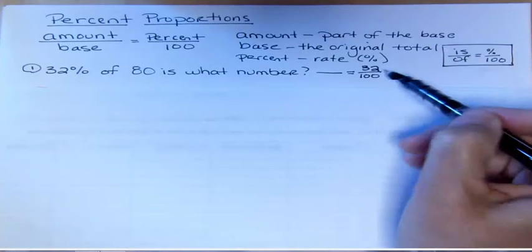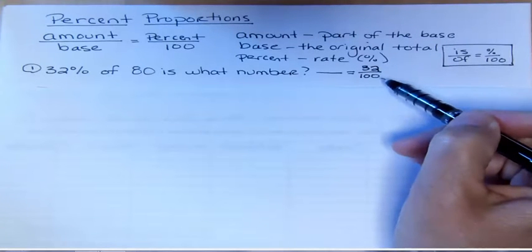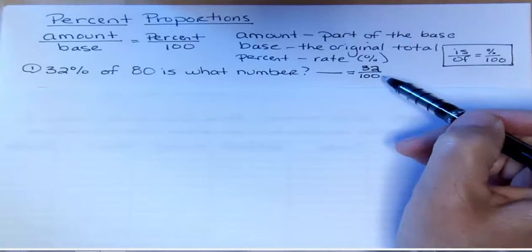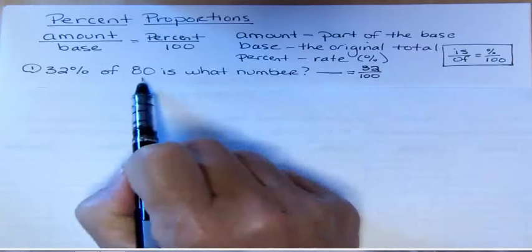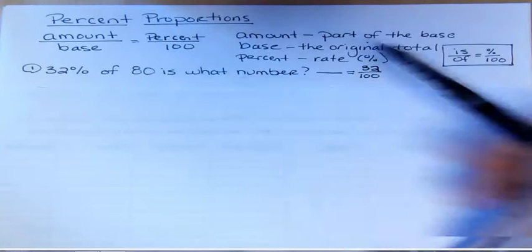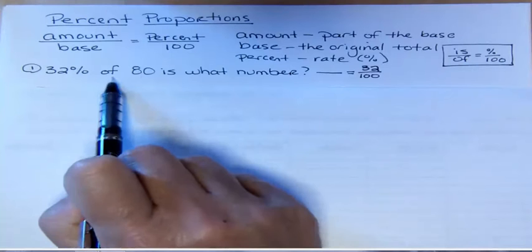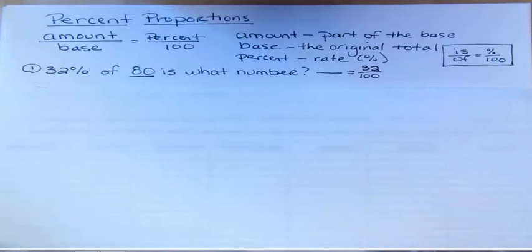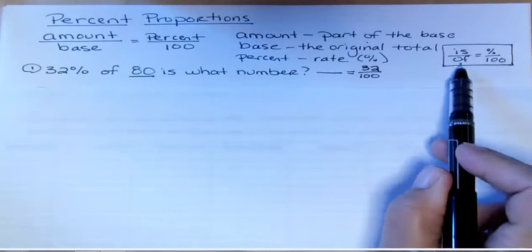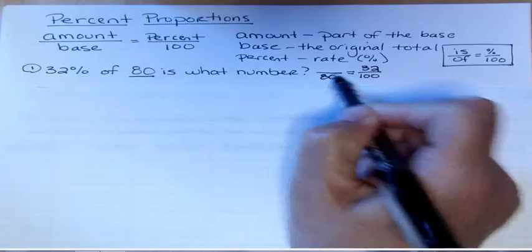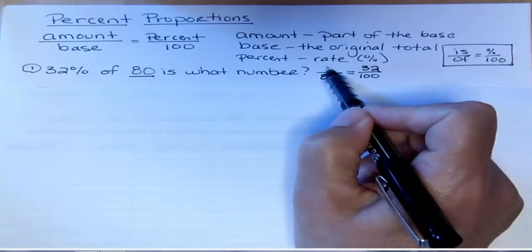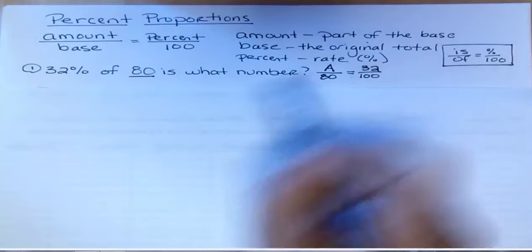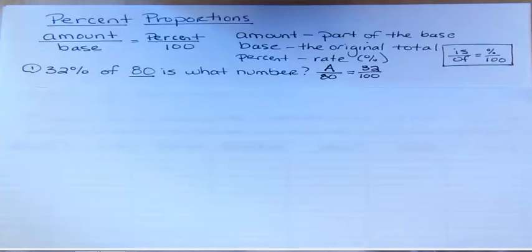Then I have to decide: is 80 the amount or is it the base? Well, 32 percent of 80—we know that 80 is the number associated with 'of' and that's the base. That 'of' is going to help you figure that out. So I have 80, and then the amount is what I don't know here. I don't know what A is, and that's the proportion that I have to solve.